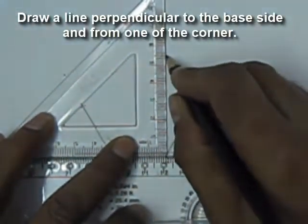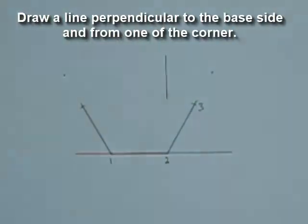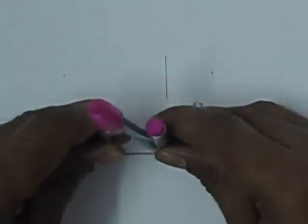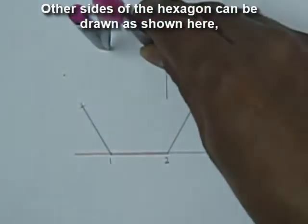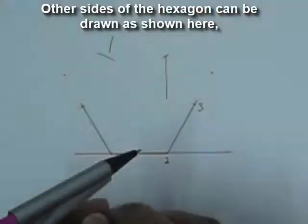Now draw a perpendicular line to the first base. And then use compass and cut. This will be another side of the hexagon and one more side of the hexagon will be made by making the arcs.